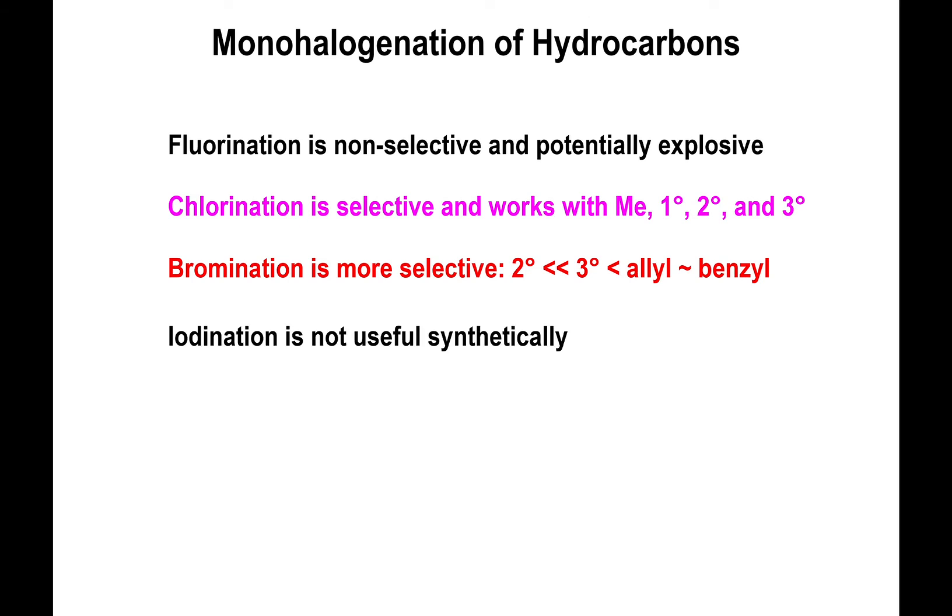Iodination is really not useful at all, because every single reaction we investigated in the previous video showed that not only is the first propagation step highly endothermic, but the overall process as a whole is endothermic. So you never get energy to feed the chain cycle, and iodination via radical mechanisms is just not going to happen. Other synthetic processes can form carbon-iodine bonds, but not through radical mechanisms.